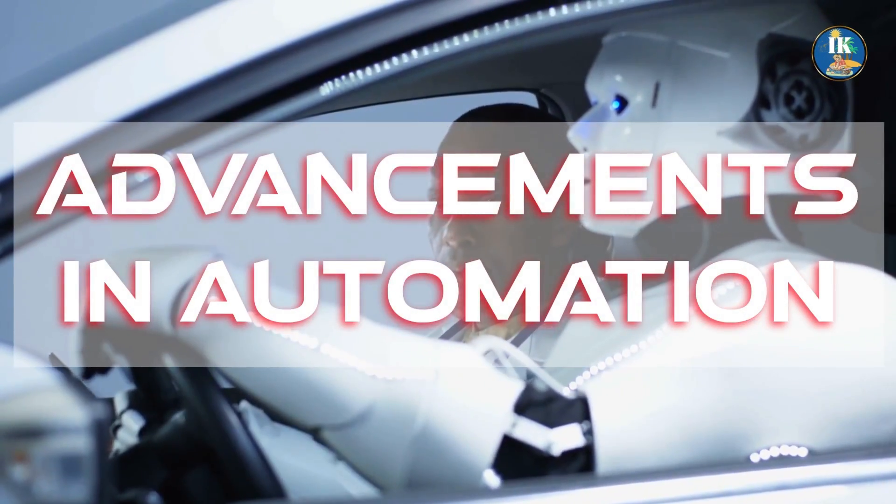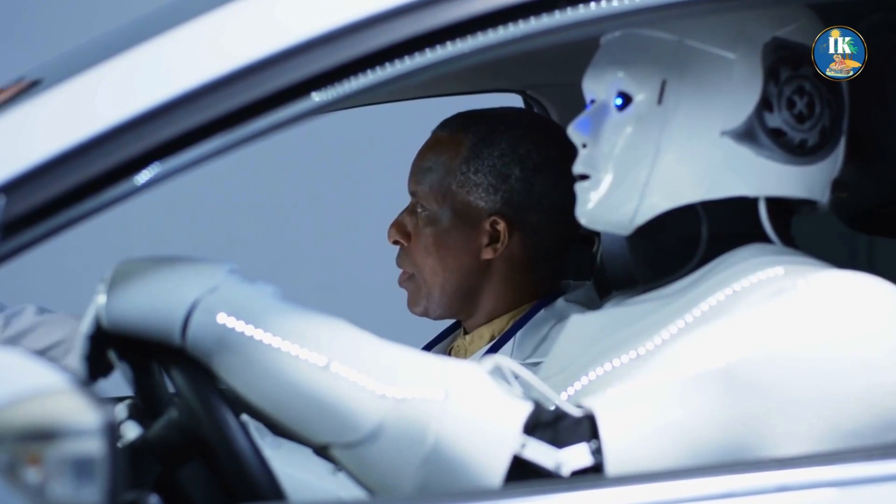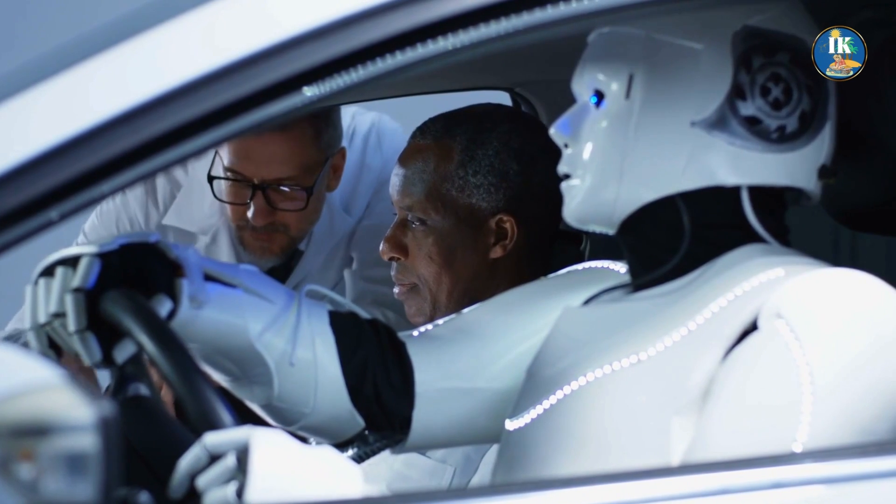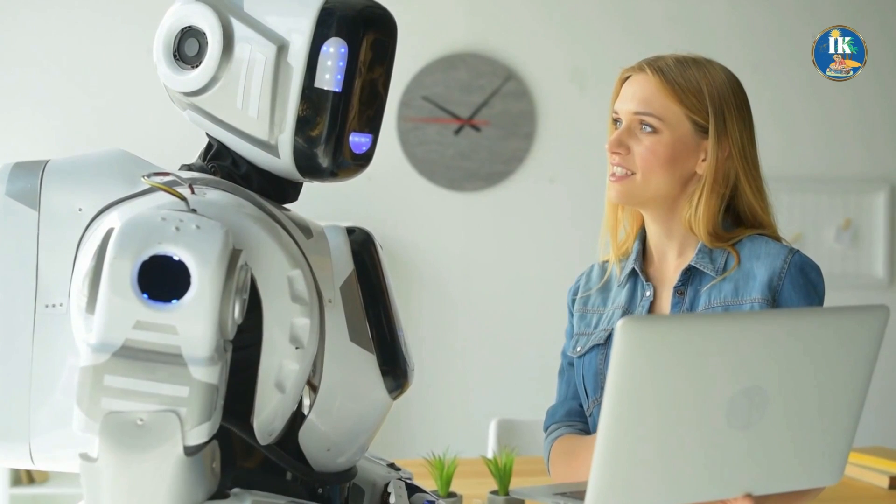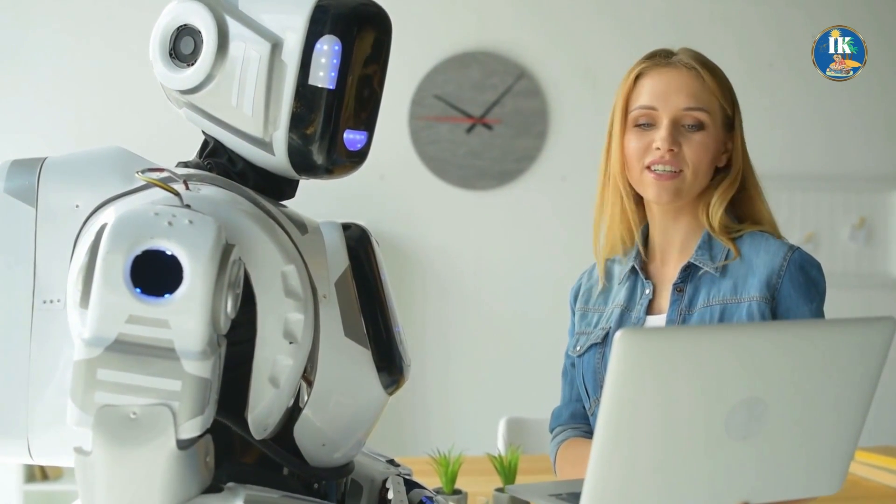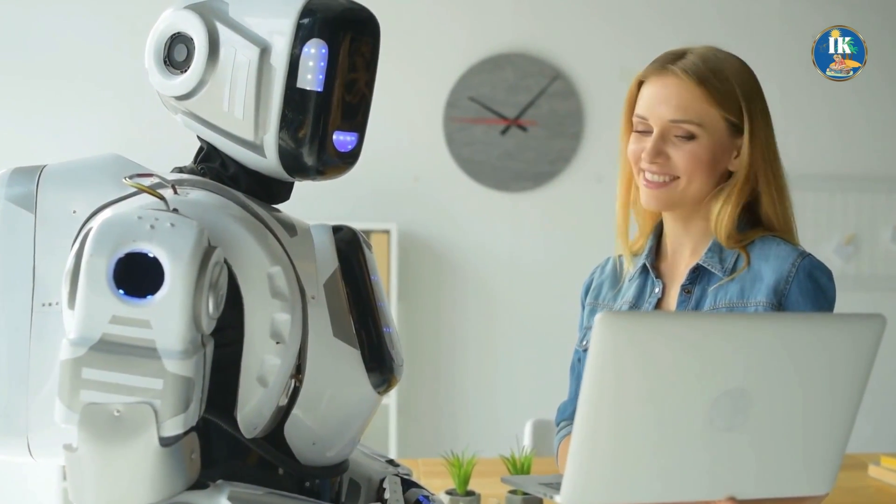Automation has come a long way since the early days of robotics, with computerized systems now able to control everything from home appliances to entire factories. The power of automation lies in its ability to simplify complex tasks and reduce the need for human intervention, allowing us to work more efficiently and effectively than ever before.